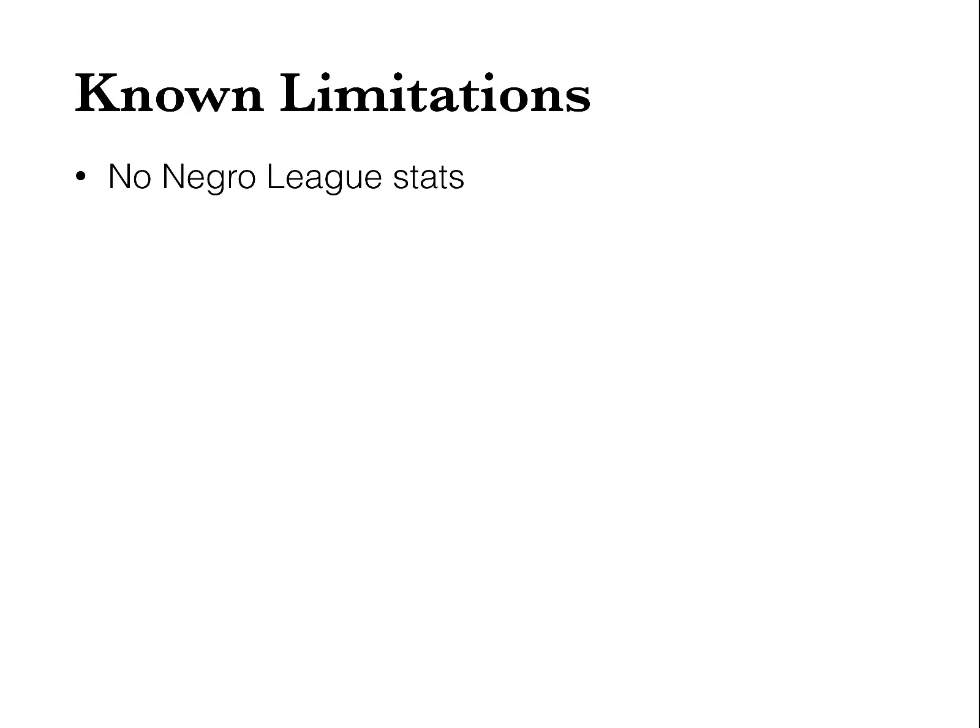There are some known limitations with this formula. No Negro League stats — I don't have good enough numbers to include Negro League players; I have my eye on Seamheads and I'm hoping to get a database at some point. I don't make a military adjustment, so players like Ted Williams or Joe DiMaggio will have a little bit lower Hall Ratings than you would think. Players this really hurts are Bobby Doerr and Billy Herman, who actually drop a little below the 100 Hall Rating line, but if they had had their full careers they would actually be over. I don't make an adjustment for postseason either — I used to in an older version of the formula, but I haven't fallen in love with any formula for postseason win values.